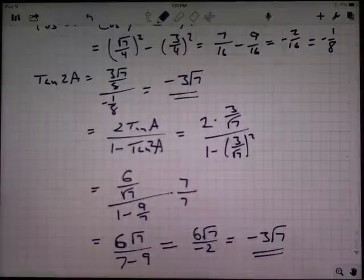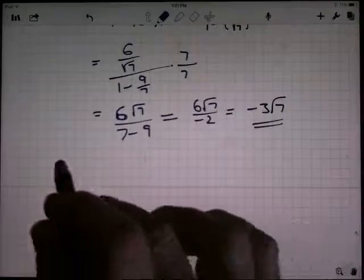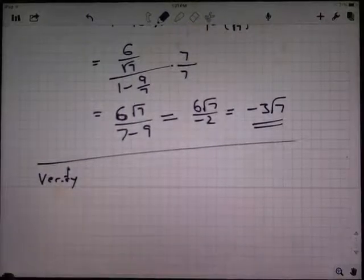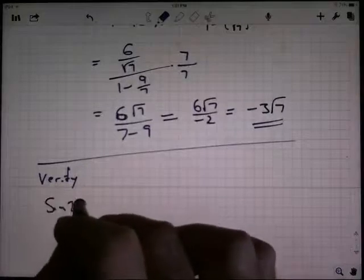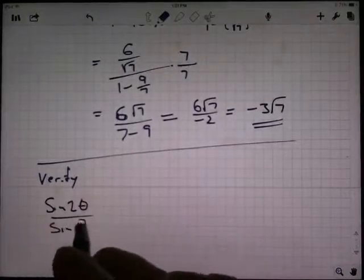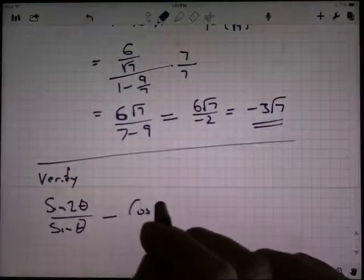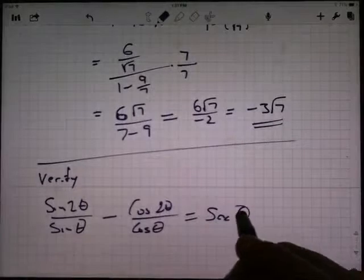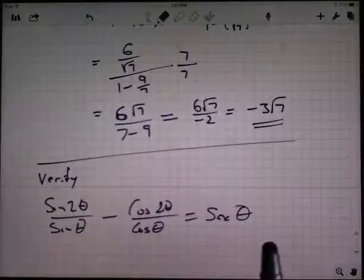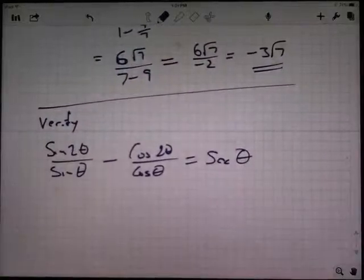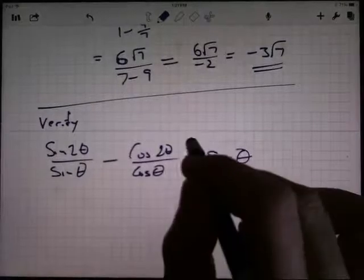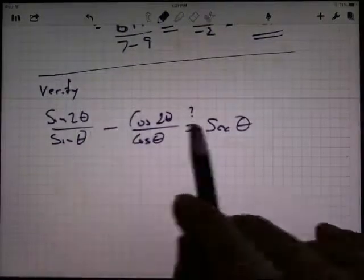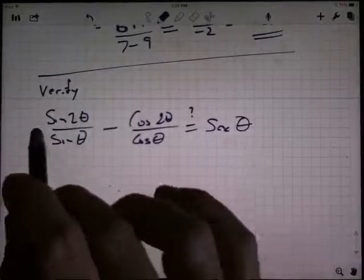One more thing I want to do here is I want to just take a look at verifying an identity here. So let's say verify. Here's something I'm claiming is an identity and I want to see if I can show that it's true. The sine of 2 theta divided by the sine of theta minus the cosine of 2 theta divided by the cosine of theta is equal to the secant of theta. Trig functions are amazing how they just have so many different relationships. Well, verify. I'm claiming this is true. I don't know that it's true. I got to prove it's true. Well, generally in verifying identities, it's easier for me to take big things and simplify them rather than take simple things and complicate them. So let me see what I can do here.